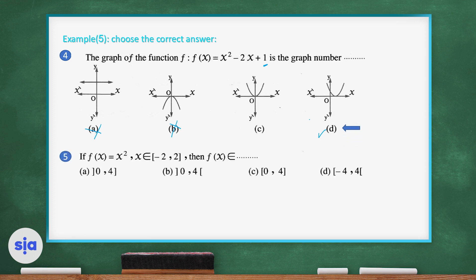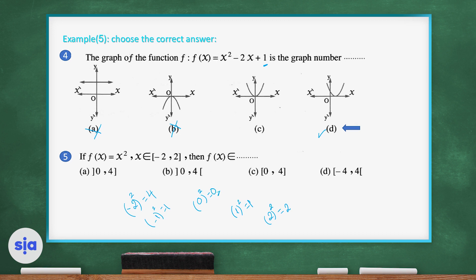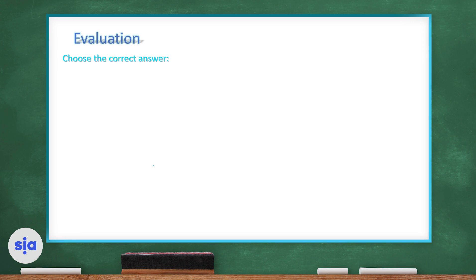Question 5: if f(x) = x² and x belongs to the interval [-2, 2], find the range of f(x). Replacing x by -2, -1, 0, 1, and 2 gives 4, 1, 0, 1, and 4. The output values range from 0 to 4, both endpoints included, so f(x) belongs to the closed interval [0, 4].